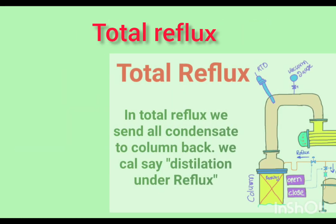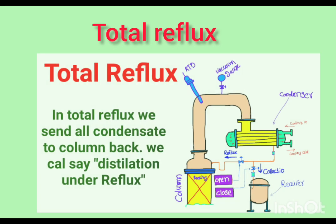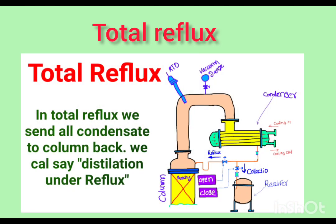The second type is total reflux. In total reflux, all the vapor produced in the column is condensed and returned to the column as liquid. This means we do zero collection of condensate — all condensate is sent back to the column.